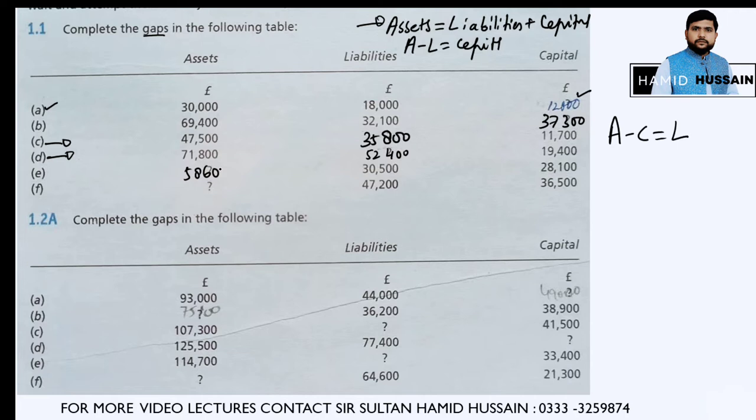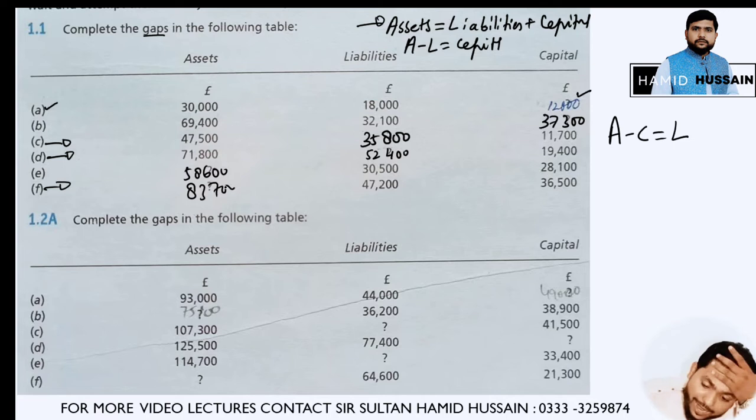In part F, you need to add 47,200 plus 36,500 and you will get 83,700.